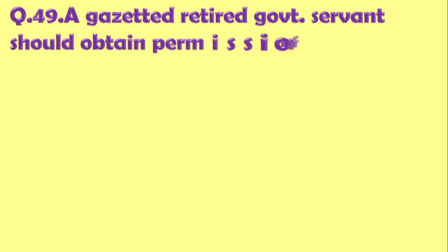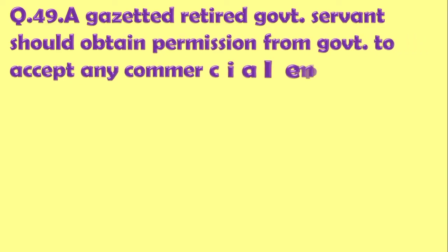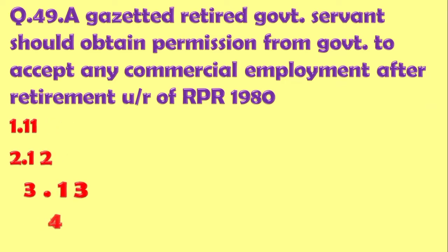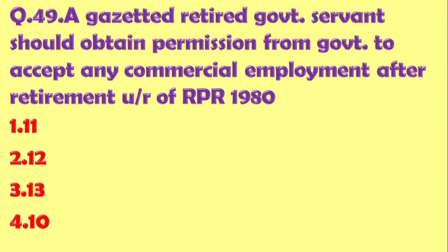Question 49: A gazetted retired Government Servant should obtain permission from Government to accept any commercial employment after retirement under which Rule of RPR 1980? RPR 1980, Rule 10 explains the permissions and conditions required before a retired Government Servant takes up any commercial employment. The answer is Option 4 - Rule Number 10.